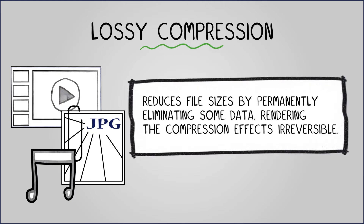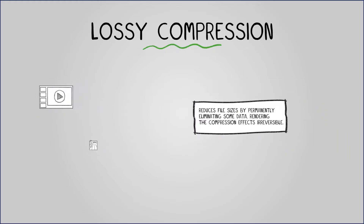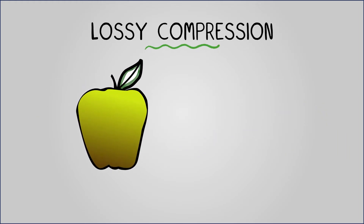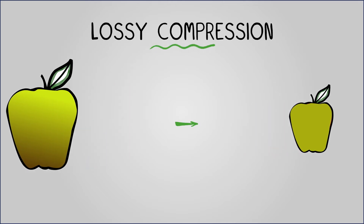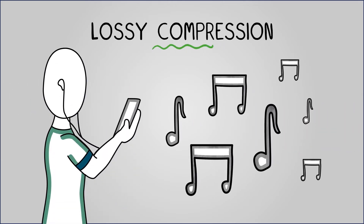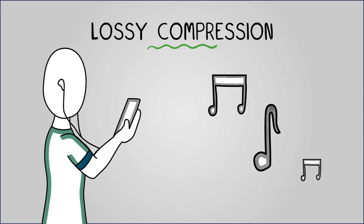Various methods are employed in lossy compression, including reducing the number of colors in images. For instance, an image of an apple might have multiple shades of green. At a distance, some of these shades are indistinguishable. By decreasing color variations, a similar image with fewer colors and less data can be created, thus reducing file size. Audio and video compression follow a similar approach, identifying and removing data that is barely noticeable to reduce file size.